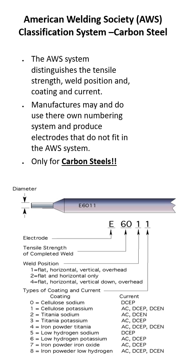And then the last number tells us what the covering is. So like zero is cellulose — that's basically wood chips and paper. And then it's got a whole laundry list of stuff — the different types of coatings from zero to eight.